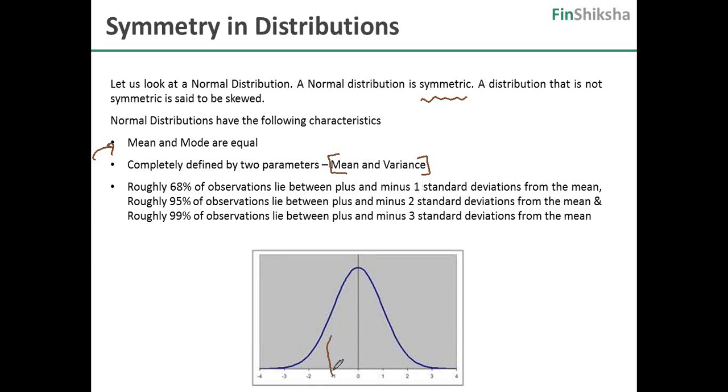Roughly 68 percent of the observations lie between plus and minus one standard deviation from the mean. Roughly 95 percent lie between plus and minus two standard deviations from the mean. And roughly 99 percent lie between plus and minus three standard deviations.